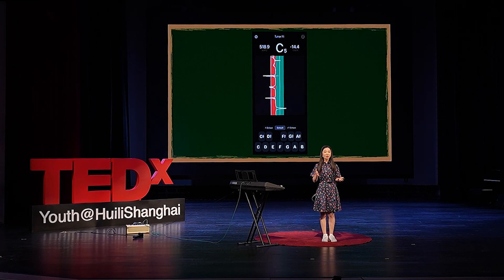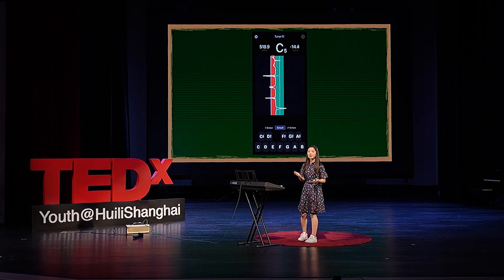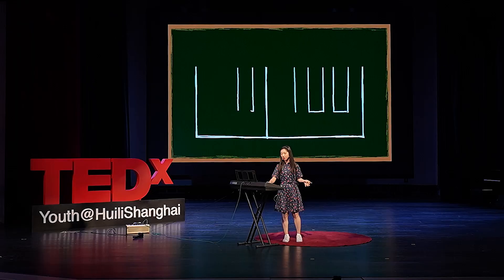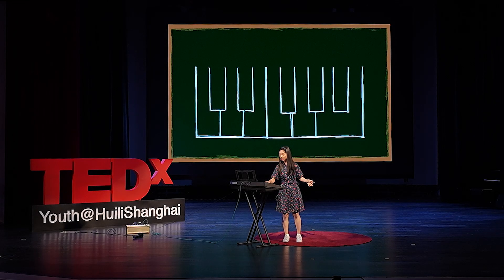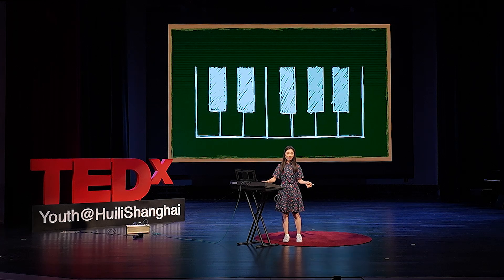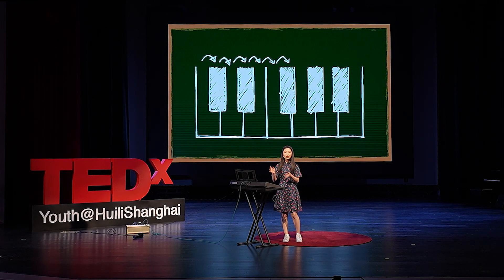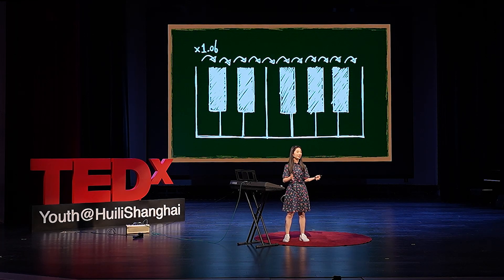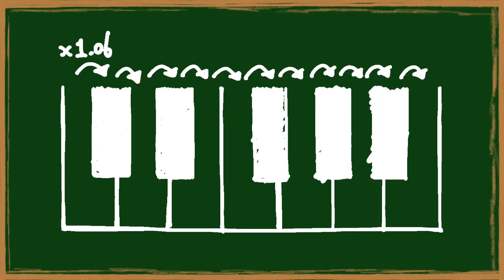Now comes the amazing part. As notes go higher, the frequencies gradually increase, but what remains the same is their percentage increase. Every time you move a semitone to the right, the latter frequency is always 6% higher than the previous one. So this is a graph of exponential growth, isn't it?